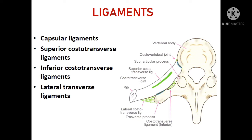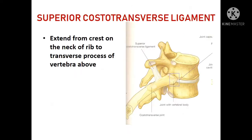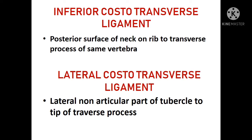The ligaments of the costotransverse joint are the capsular ligament, superior costotransverse ligament, inferior costotransverse ligament, and the lateral costotransverse ligament. The superior costotransverse ligament has anterior and posterior laminae, extending from the crest on the neck of the rib to the transverse process of the vertebra above. The lateral costotransverse ligament extends from the lateral non-articular part of the tubercle to the tip of the transverse process.